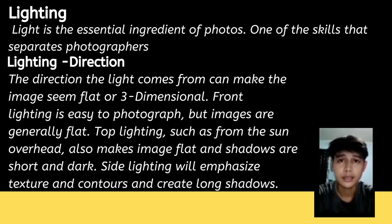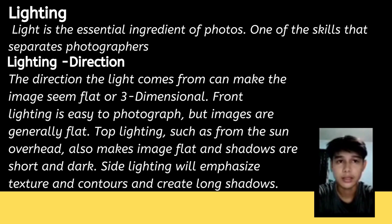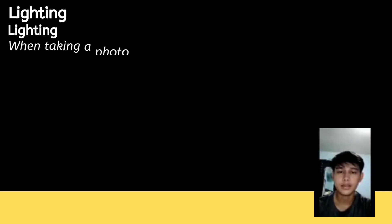Light is the essential ingredient of photos. The direction the light comes from greatly affects the image. Front lighting is easy to photograph but images are generally flat. Top lighting, such as from the sun overhead, also makes images flat with short, dark shadows. Side lighting will emphasize textures and contours and create long shadows in color.